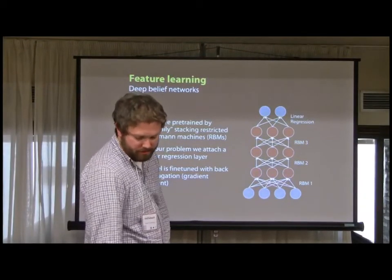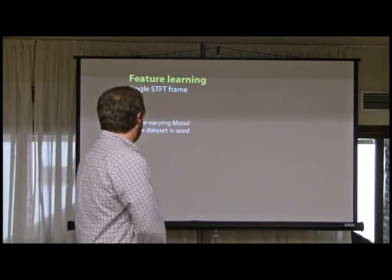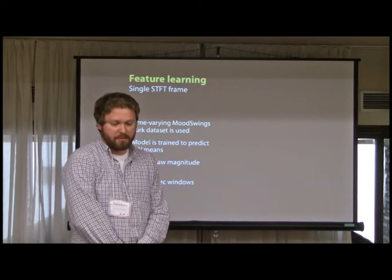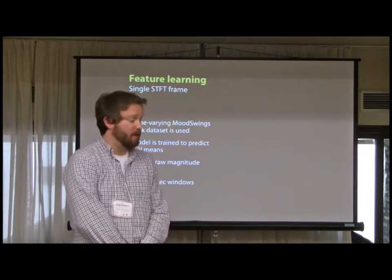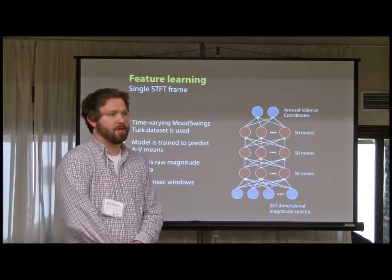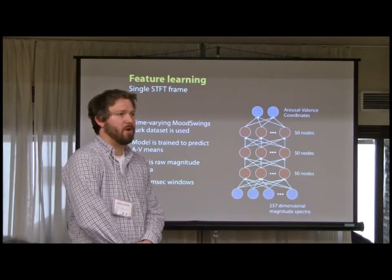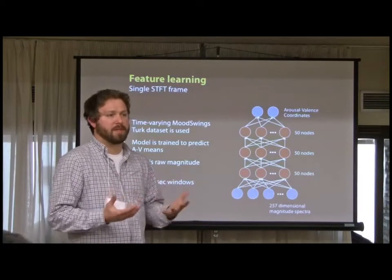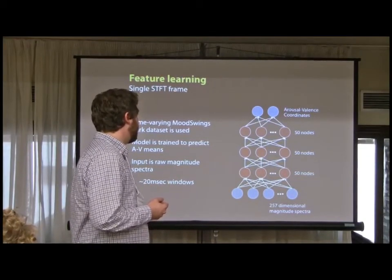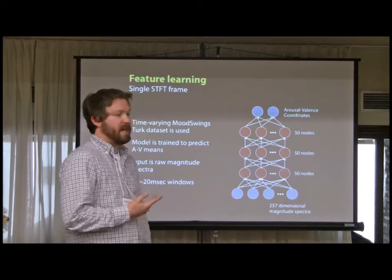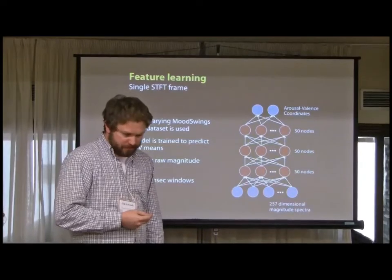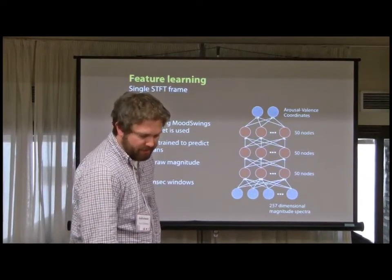In our system, we are using the Mechanical Turk dataset. The model is trained to predict AV means, and the input is raw magnitude spectra at about 20-millisecond windows, just like all the other standard acoustic features, so we can provide something to actually compare. The model itself has 50 nodes at each layer, and as the output we're only trying to predict the mean of the collected data in the AV space.